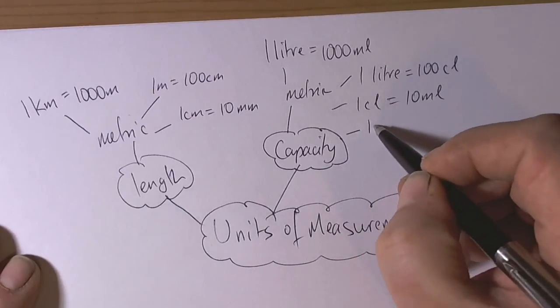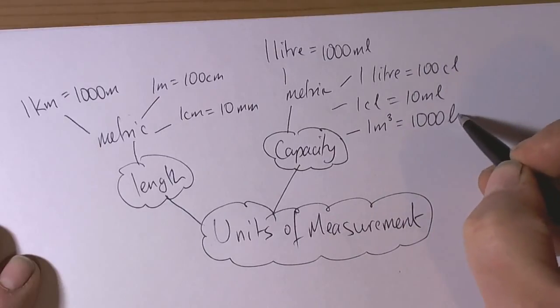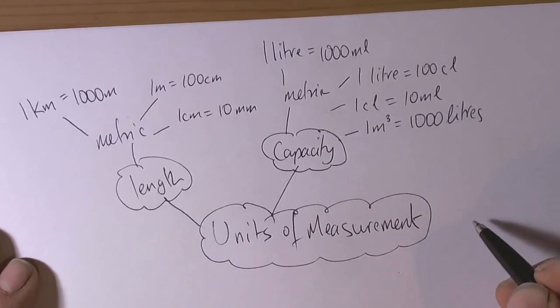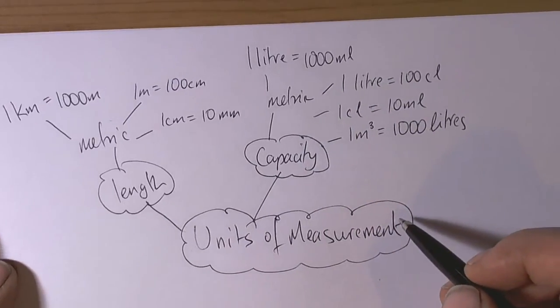We also need to recognise that a cubic metre is equal to 1000 litres. So those are the capacity units that are the most common ones used in your exams.